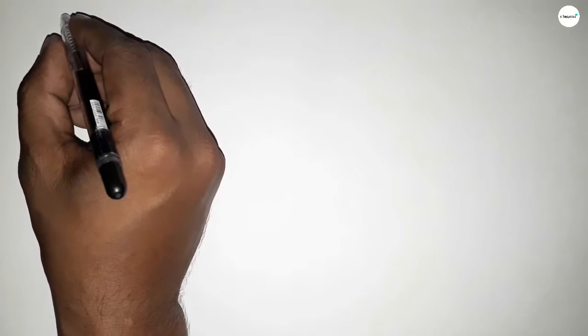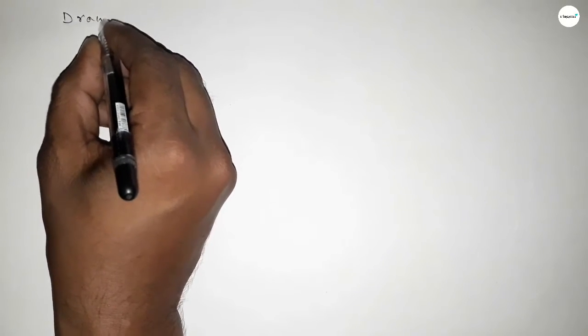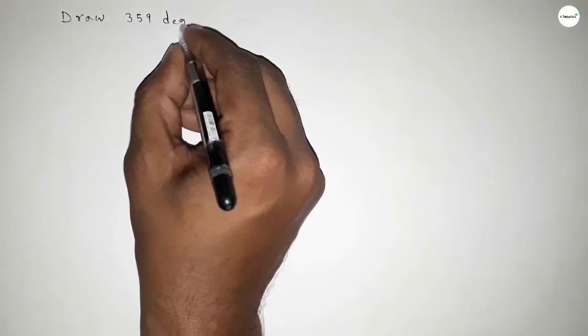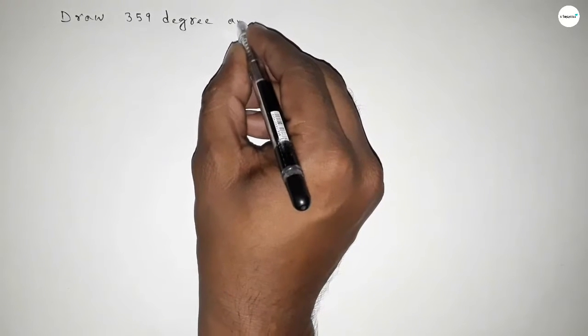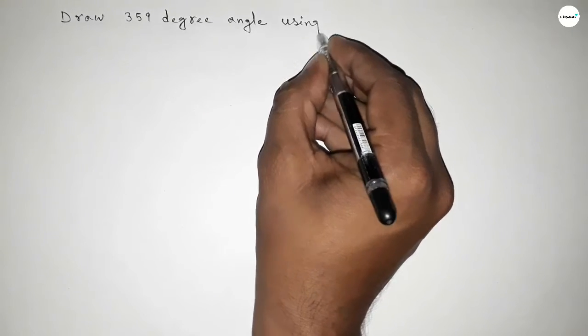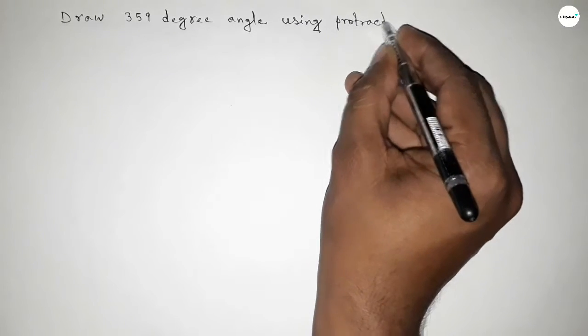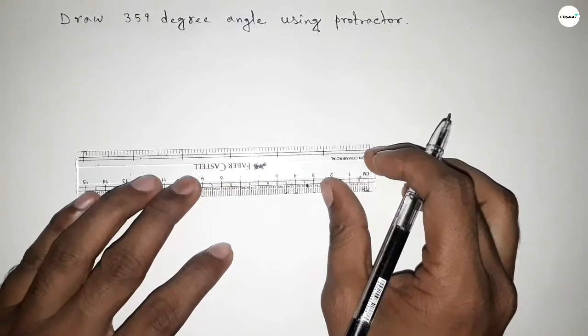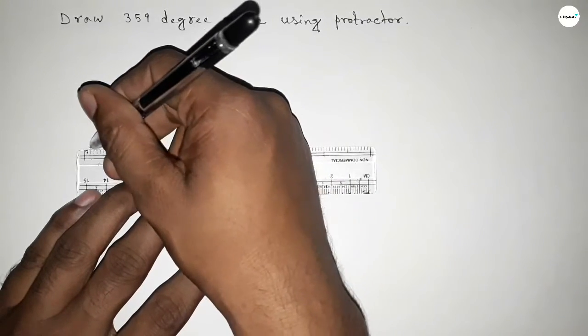Hi everyone, welcome to SHR classes. Today in this video we have to draw a 359-degree angle using a protractor. So let's start the video. First of all, we have to draw a straight line of any length.